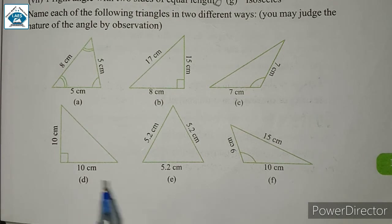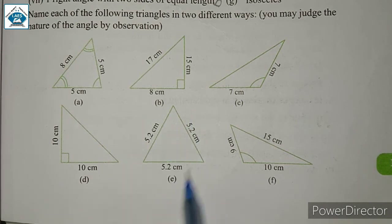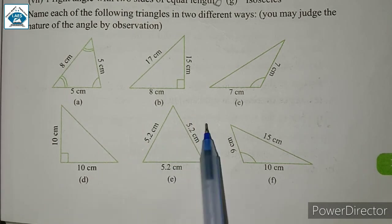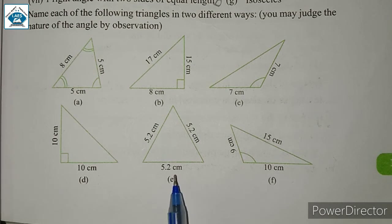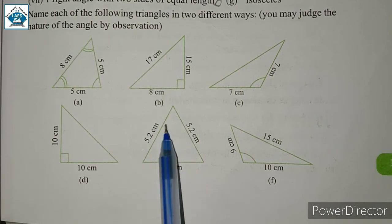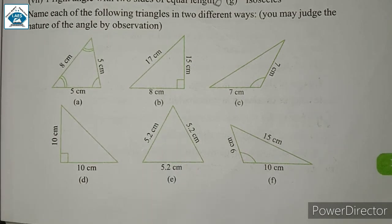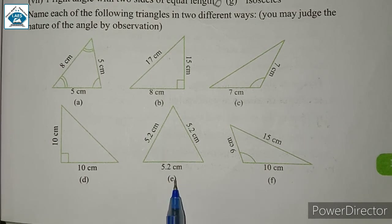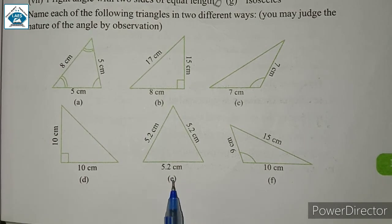So, here we have two names: one is isosceles and the other is obtuse angled triangle. For the triangle with all three sides of the same measurement — that is equilateral — and all angles less than 90 degrees, it is also an acute angled triangle.